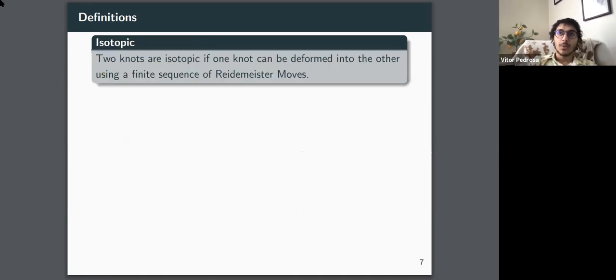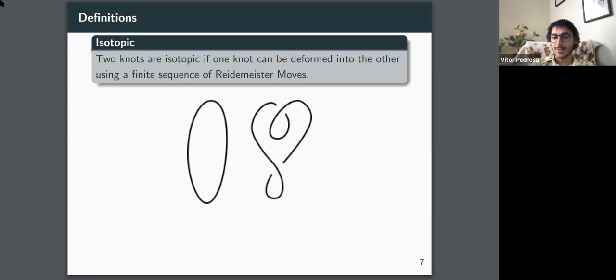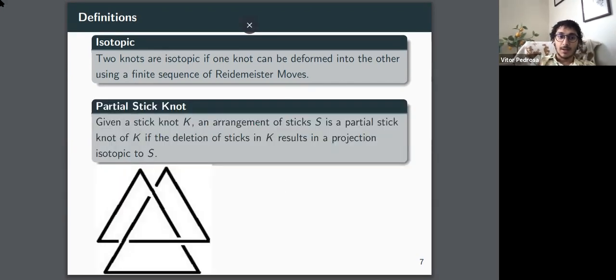Another, since we're dealing with Reidemeister moves, we need to be able to tell if something is equivalent to the other thing. And we do this by the term isotopic. Next. So for example, on the left-hand side, we have the unknot and the right-hand side, all we did is that we flipped, we twisted the top and we twisted the bottom and we got what we call an isotopic knot because you can just undo those by untwisting. And you get something that's equivalent.